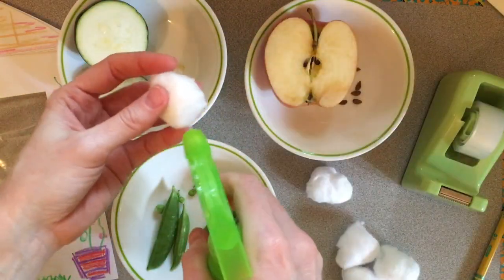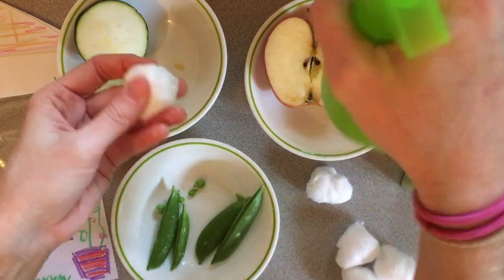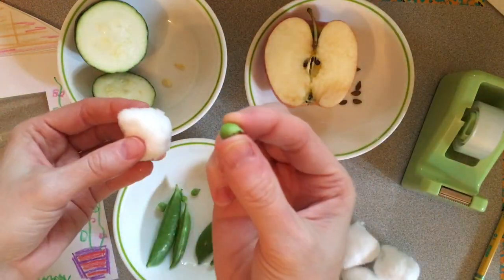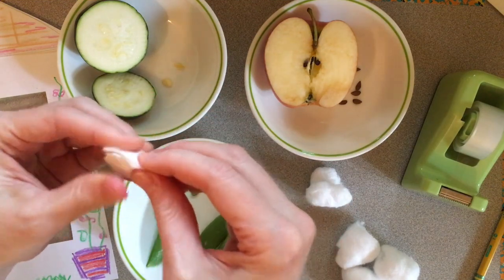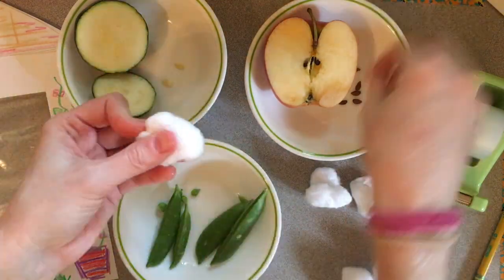Grab another cotton ball, spray it with water. Again, damp, not too wet, but not too dry. Put a seed in the middle and wrap it up in a tight hug. And then finish that process with the rest of your seeds.